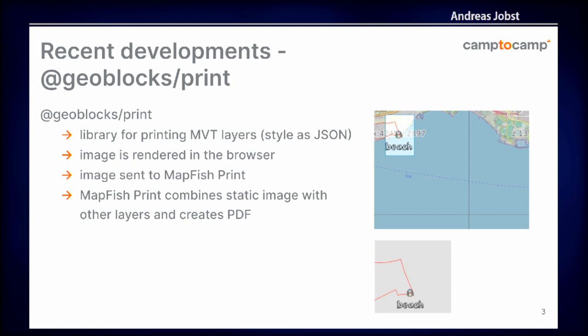What Guillaume did, he built this little print block. What it does is it allows us to render Mapbox vector tile layers in the browser, and then send the result as a geo-referenced image to Mapfish Print. Mapfish Print then combines this image with other layers, and you get your regular Mapfish Print map as a result.